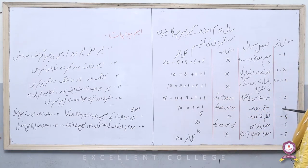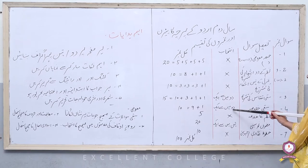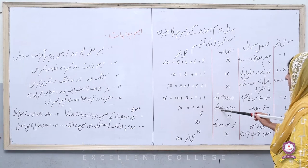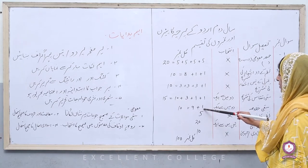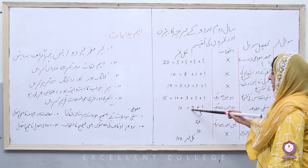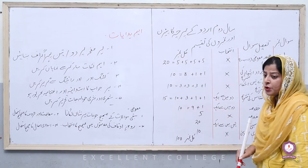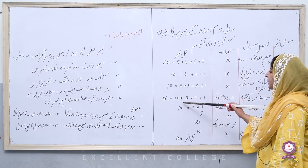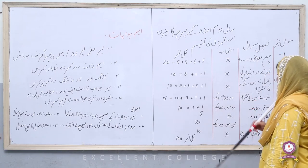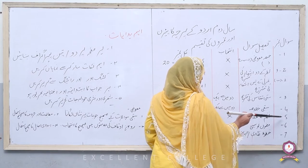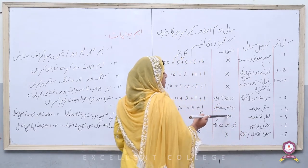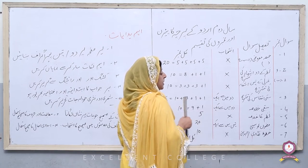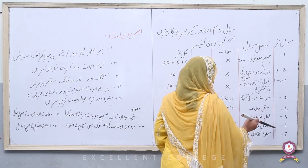سوال نمبر چار: سبق کا خلاصہ۔ اس میں بھی دو خلاصے آئیں گے، دونوں میں سے ایک کرنا ہوگا۔ ایک نمبر مصنف کے نام کا اور نو نمبر خلاصے کے — کل دس نمبر۔ بہت سارے سٹوڈنٹ خلاصہ لکھتے وقت مصنف کا نام نہیں لکھتے اور ایک نمبر گنوا دیتے ہیں۔ سوال نمبر پانچ: نظم کا خلاصہ — اس میں کوئی چائس نہیں، یہ پانچ نمبر کا ہے۔